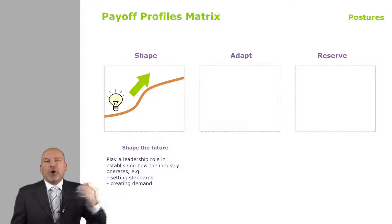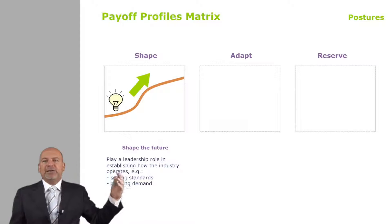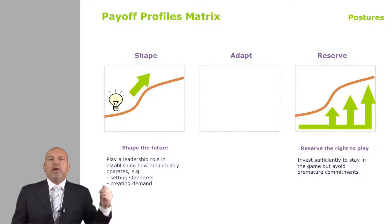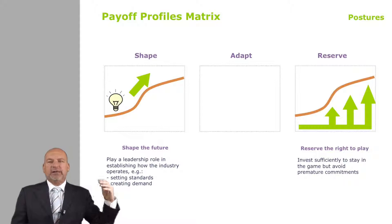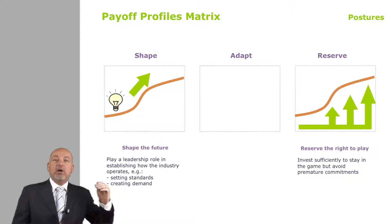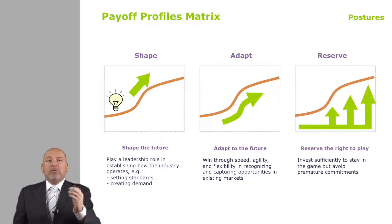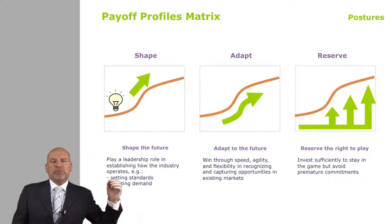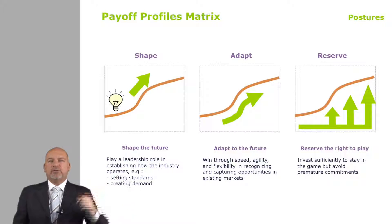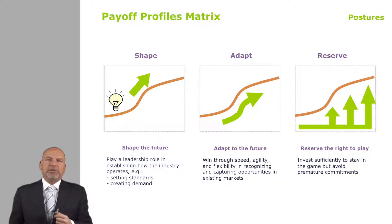At the other end, one might argue that Microsoft has spent the last 20 years reserving the right to play by investing a little bit to stay in the search game, for example, but not really succeeding. Other companies might relentlessly choose to adapt — be the second fastest mover in the market. More often than not, most companies dabble across all three: they shape in some areas, adapt in others, reserve in others. So that's the first dimension.